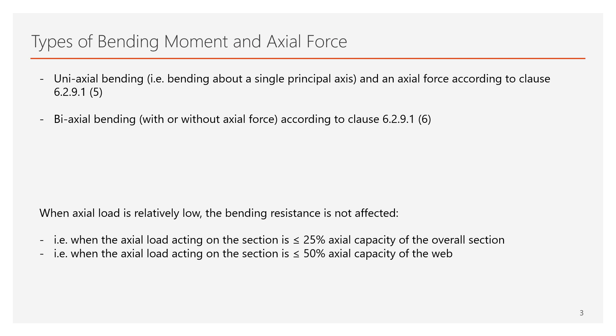The uniaxial bending moment is referring to a bending about one of the single principal axes. The relevant formulas can be found in clause 6.2.9.15 in that case. The second condition is when biaxial bending occurs. It means that a moment is acting on the cross section in both the yy and zz axis respectively.